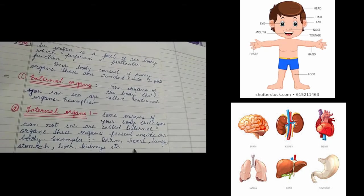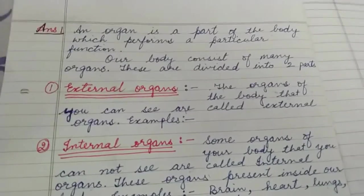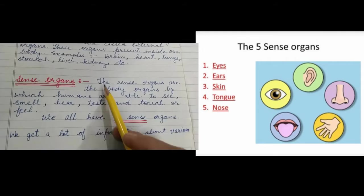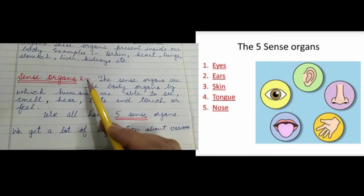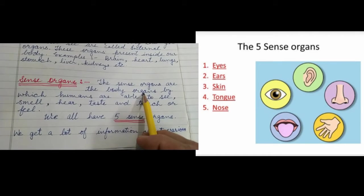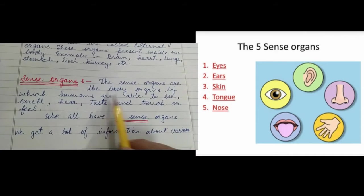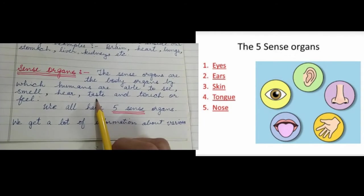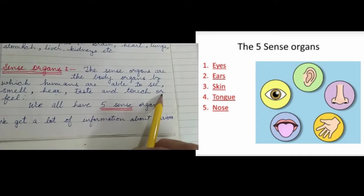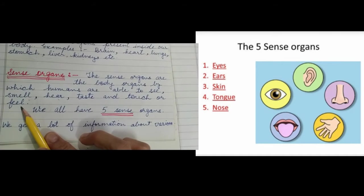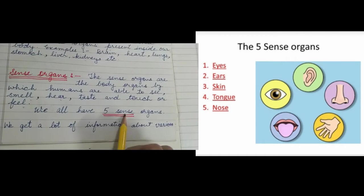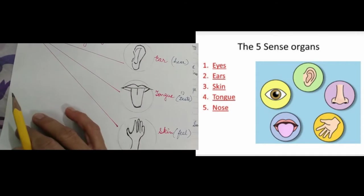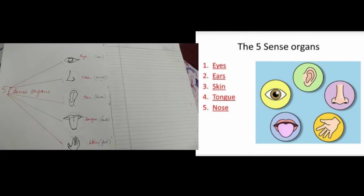Now we will go to the next topic: sense organs. The sense organs are the body organs by which humans are able to see, smell, hear, taste, and touch or feel. We all have five sense organs, as you can see in the picture.